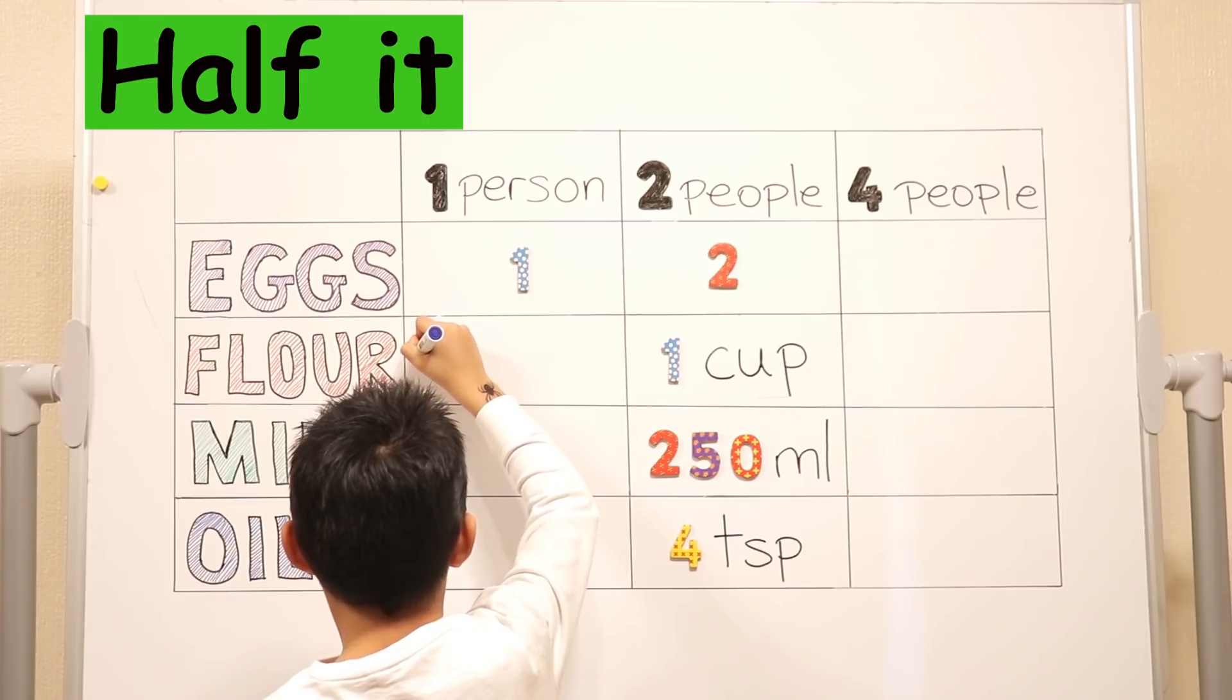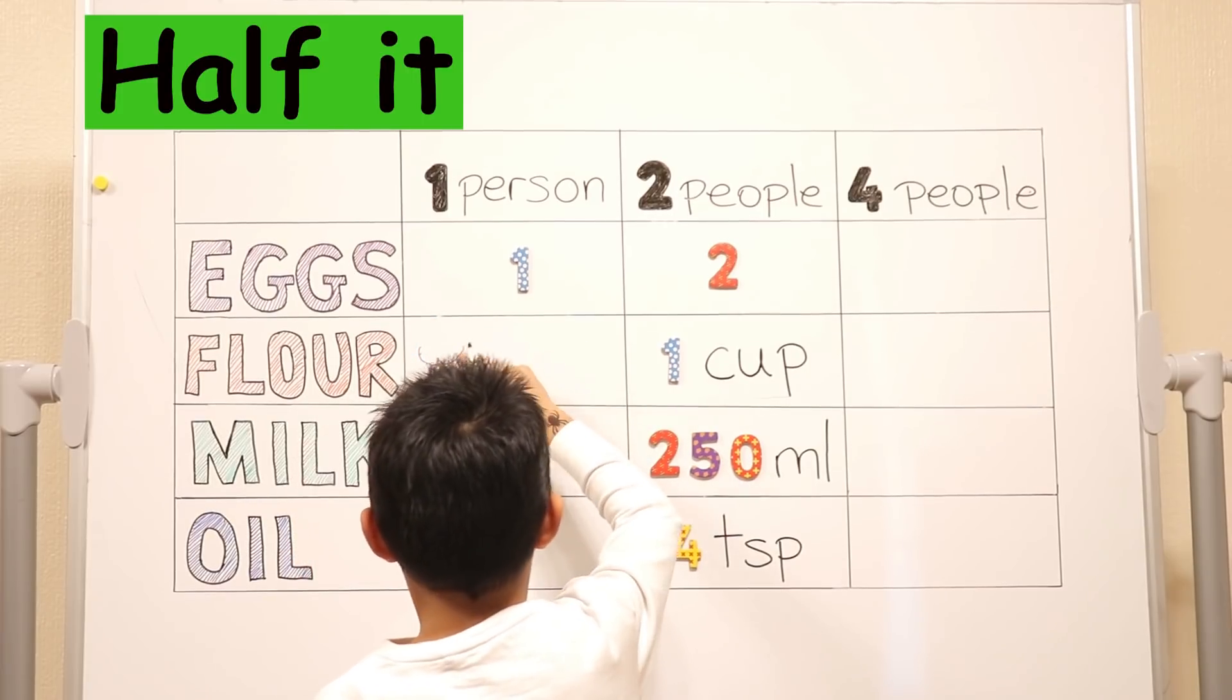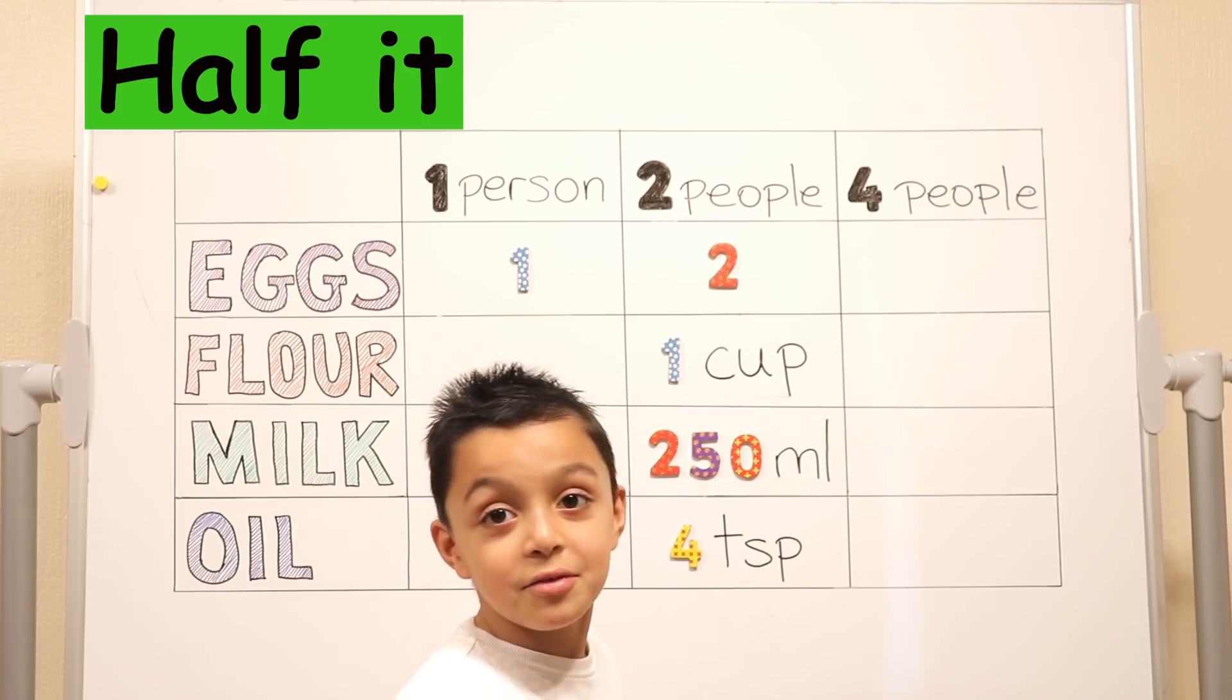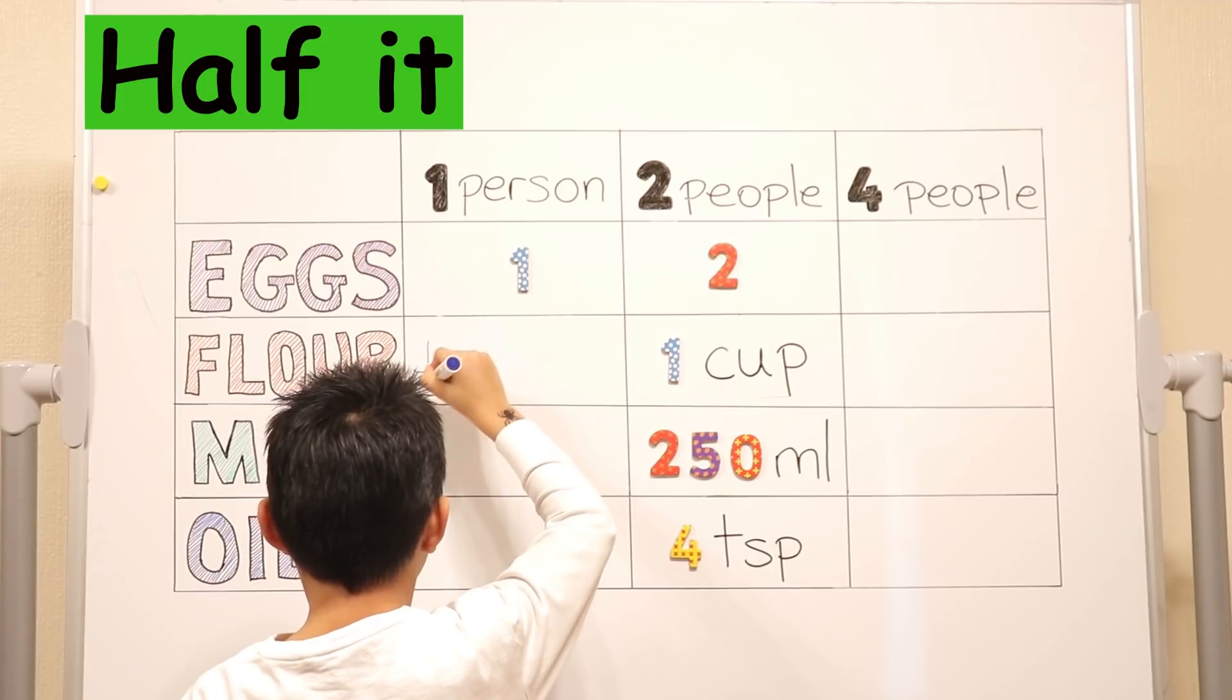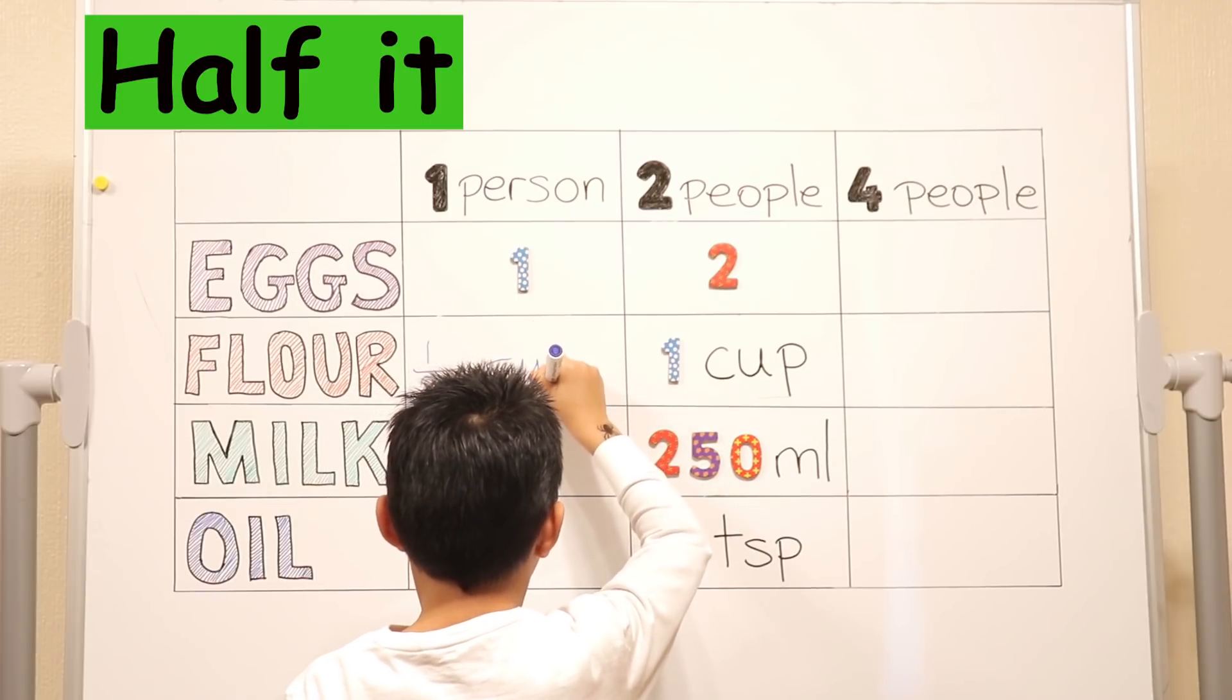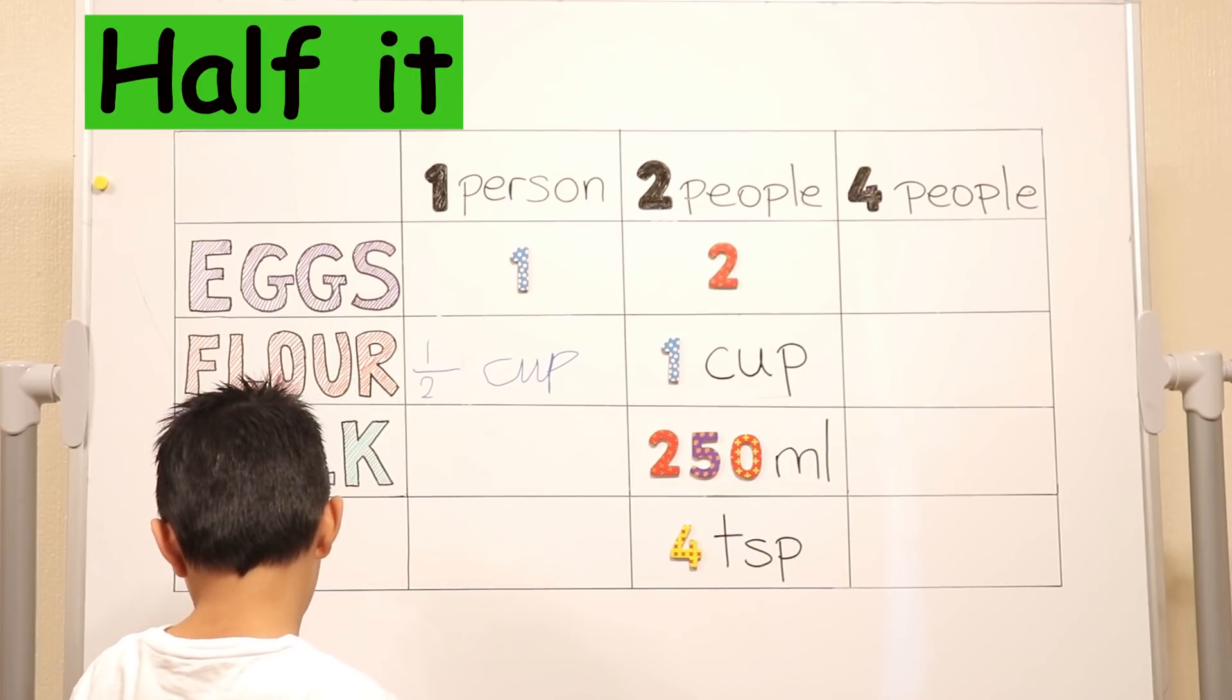So write the fraction. Half. Should I draw a cup? No, just write the fraction. How do you write a half? That's very cute. That's not what I mean, darling. I mean the actual fraction. How does a half look? One out of two. Yes, that's what I mean. Half and then cup. Okay, good. So that's correct. You need half a cup because you're making for one person instead of two.